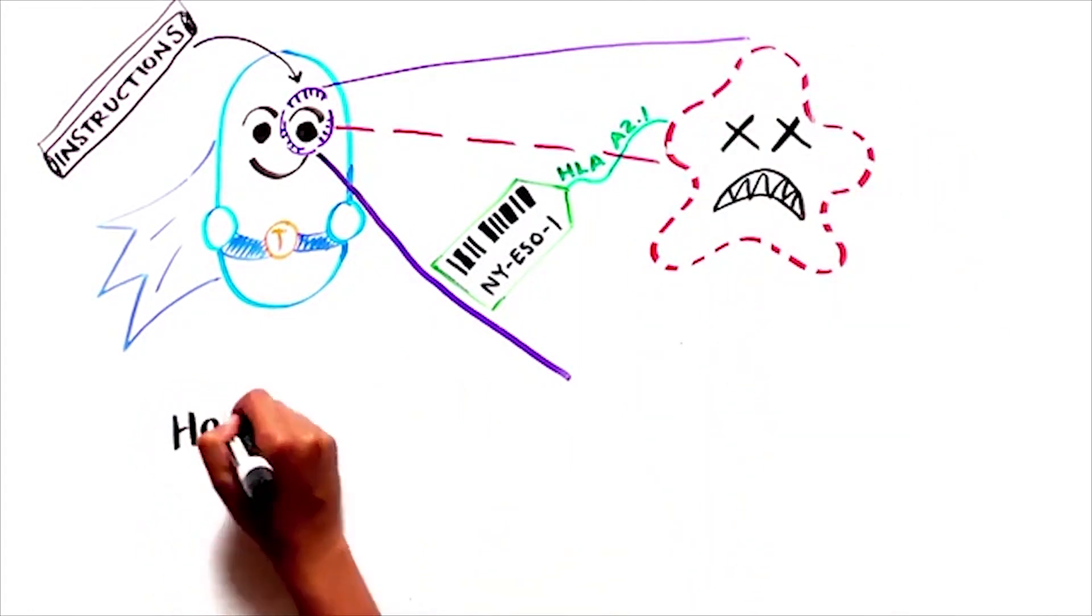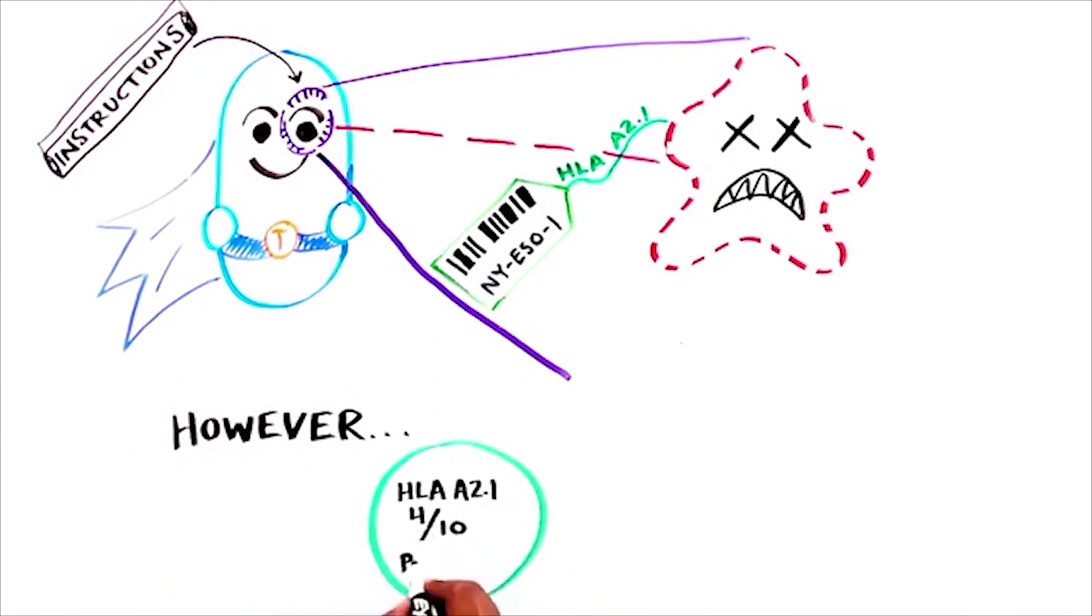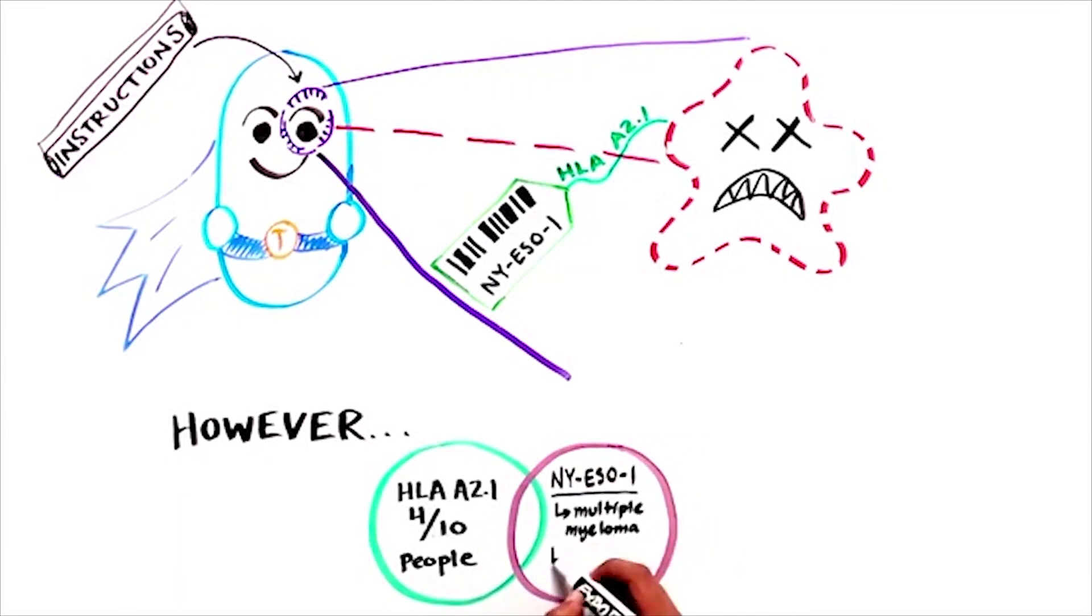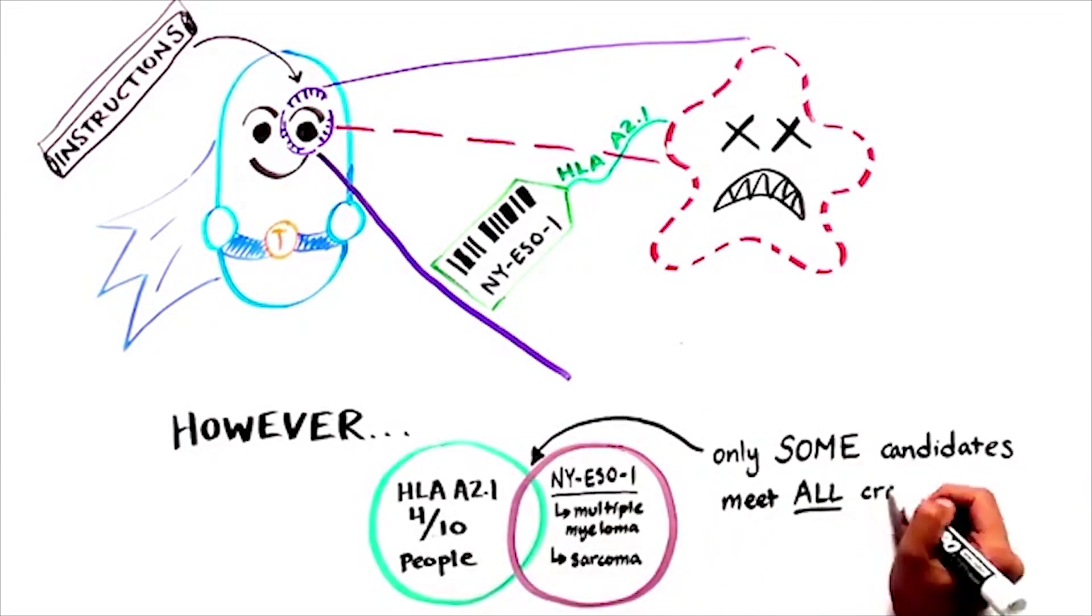However, HLA-A2.1 is only present in 4 out of 10 people. Furthermore, the NYESO1 tag is not found in all cancers. It's predominantly expressed in multiple myeloma and sarcoma, but can be found in other cancer types as well. So, only some potential candidates will meet all of the eligibility criteria.